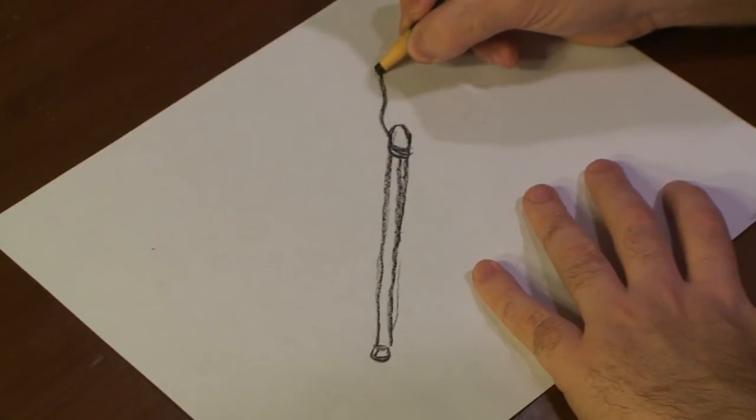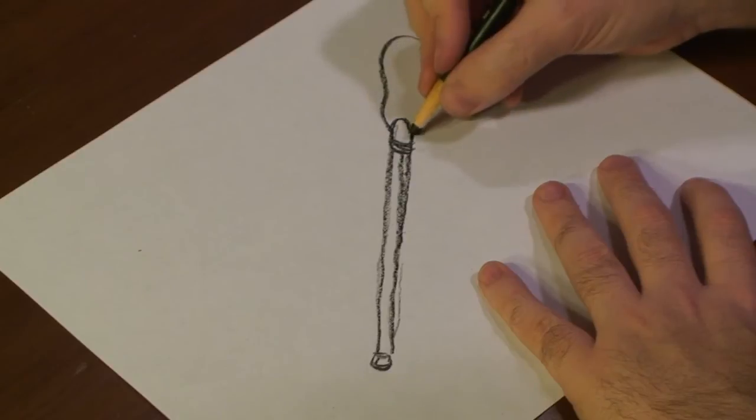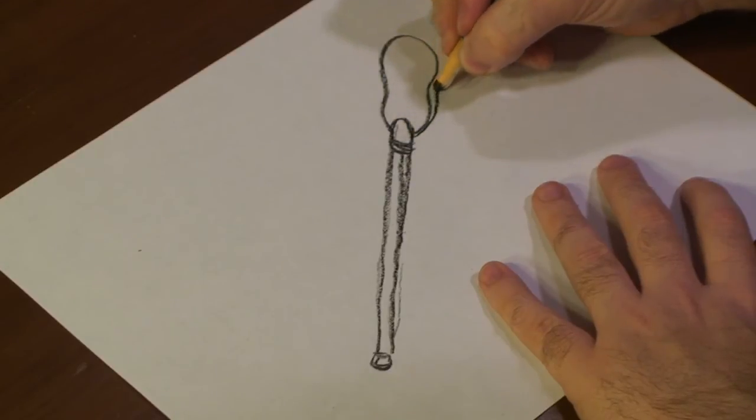So draw sort of a peanut shape, like so. And you're going to draw another one right around that.